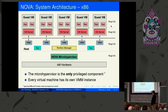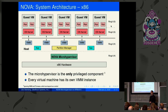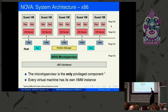Everything else — all the apps running in the host and everything that runs in guest — runs deprivileged. We give every virtual machine its own instance of a user-level virtual machine monitor, which means that should something go wrong, like a VM escape, it will only affect that VM instance and the rest of the system will not be affected.